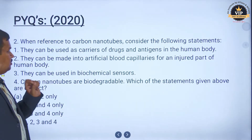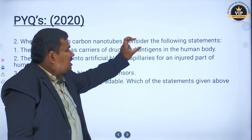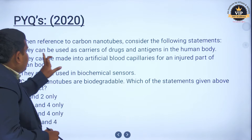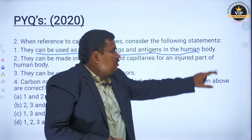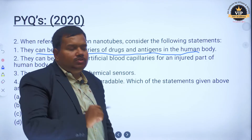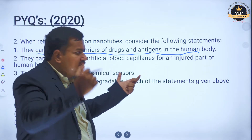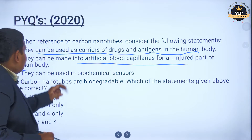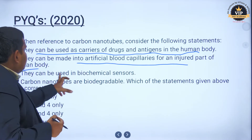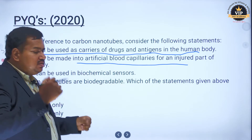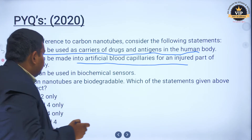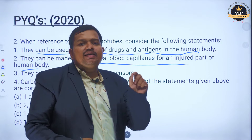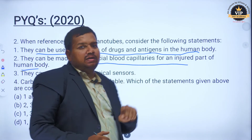Next, the 2020 prelims question: with reference to carbon nanotubes, consider the following statements. Statement 1 — they can be used as carriers of drugs and antigens in the human body. That is right, as carbon nanotubes enable better drug delivery. Statement 2 — they can be made into artificial blood capillaries for an injured part of the body. That is also possible. Statement 3 — they can be used in biochemical sensors. Yes. Statement 4 — carbon nanotubes are biodegradable. Yes. All four statements are correct.